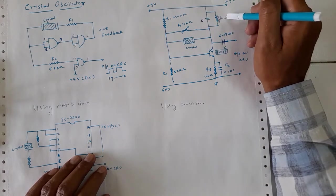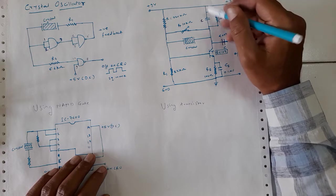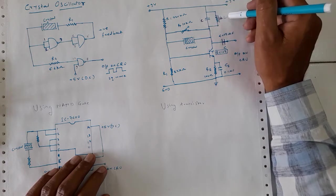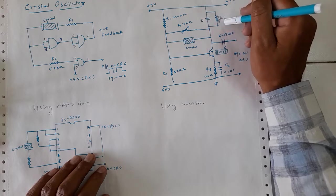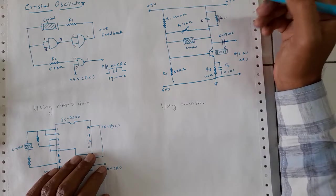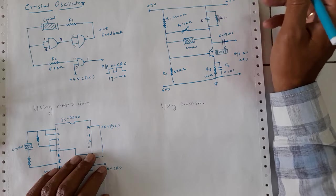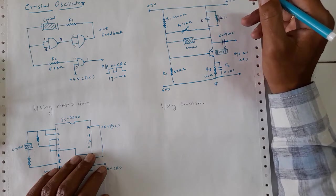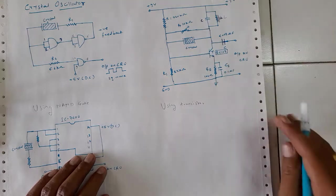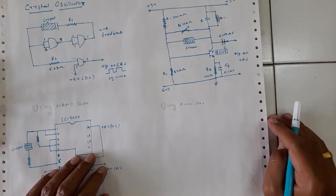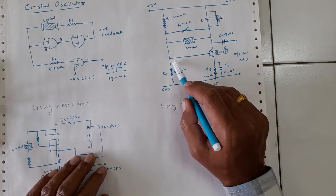The LC circuitry is used here to generate a high frequency. As we know, the frequency of oscillations when we have L and C in the circuitry is given by f = 1 over 2π times the square root of LC, which gives us the frequency of that oscillation.